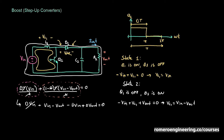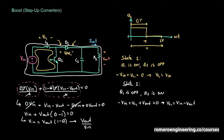We can see that D·Vin cancels with minus D·Vin. Factoring out Vout, we get Vin plus Vout times (D minus 1) equals zero. This gives Vin equals Vout times (1 minus D), so the relationship between output and input voltage is Vout over Vin equals 1 over (1 minus D), or equivalently Vout equals Vin over (1 minus D).